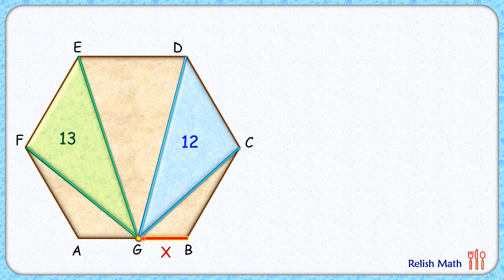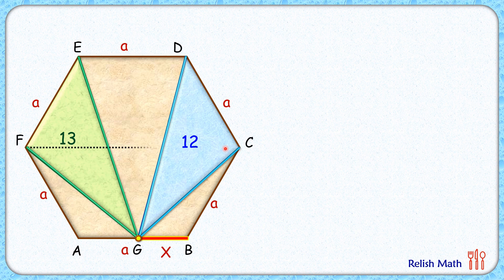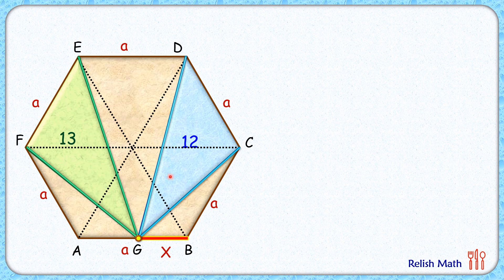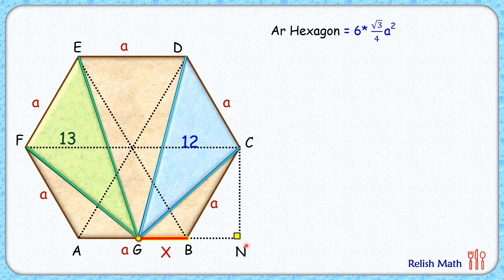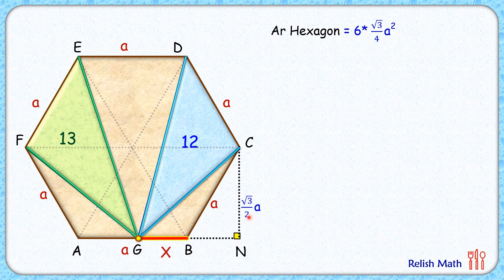To find the value of x, we'll first find the area of the full hexagon. Let's assume the side length of each side is 'a' centimeters and draw the main diagonals of the hexagon. These diagonals divide it into six equal parts, each being an equilateral triangle, so the area of the hexagon is six times the area of an equilateral triangle. The height CN between FC and AB equals the height of an equilateral triangle, which is √3/2·a.